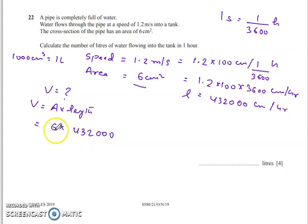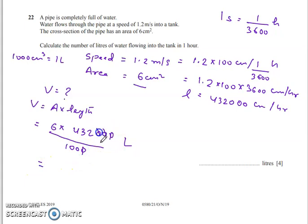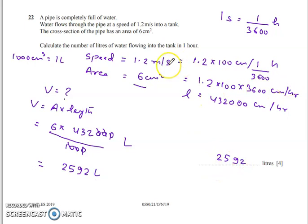Multiplying 432,000 by the area and dividing by 1000 to convert to liters — cancelling the zeros — the answer is 2592 liters. First we need to understand how to convert into the same unit, identify the required unit, convert accordingly, and then substitute the values into the formula.